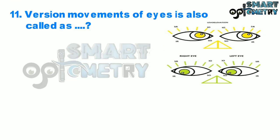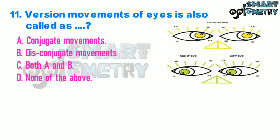Question 11. Version movements of eyes is also called as: A. Conjugate movements, B. Disconjugate movements, C. Both A and B, D. None of the above.